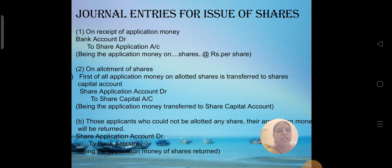The company may issue shares at par, that is the face value. The company can demand the whole amount due on the shares in a lump sum or in installments. The company calls for the application money, then calls the balance amount at the time of allotment. A company may open a share application account and a share allotment account separately, or a single share application and allotment account.